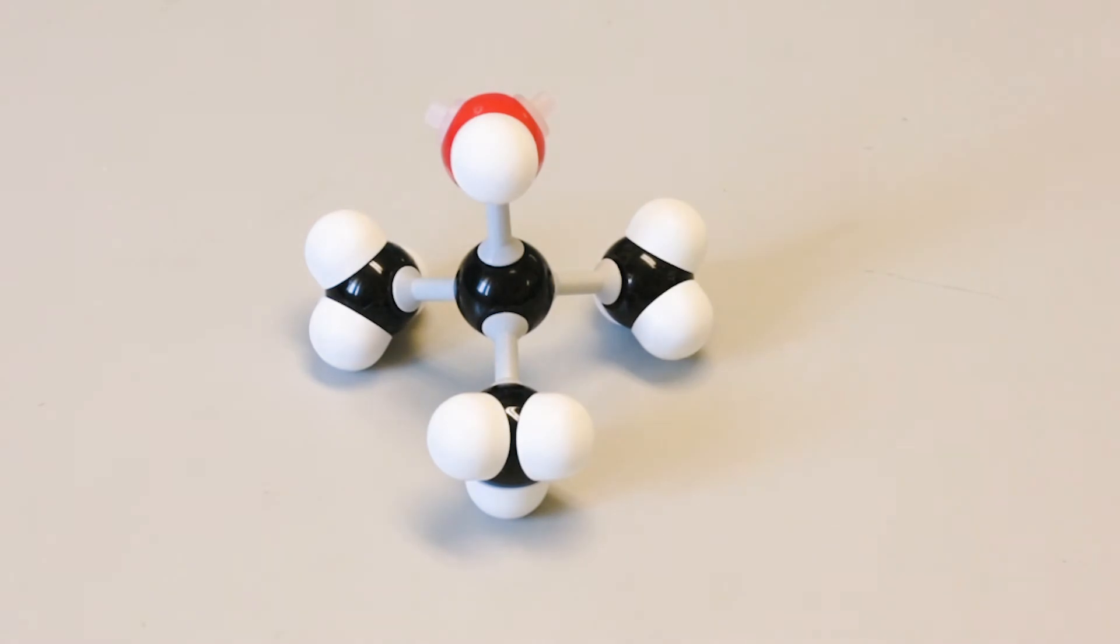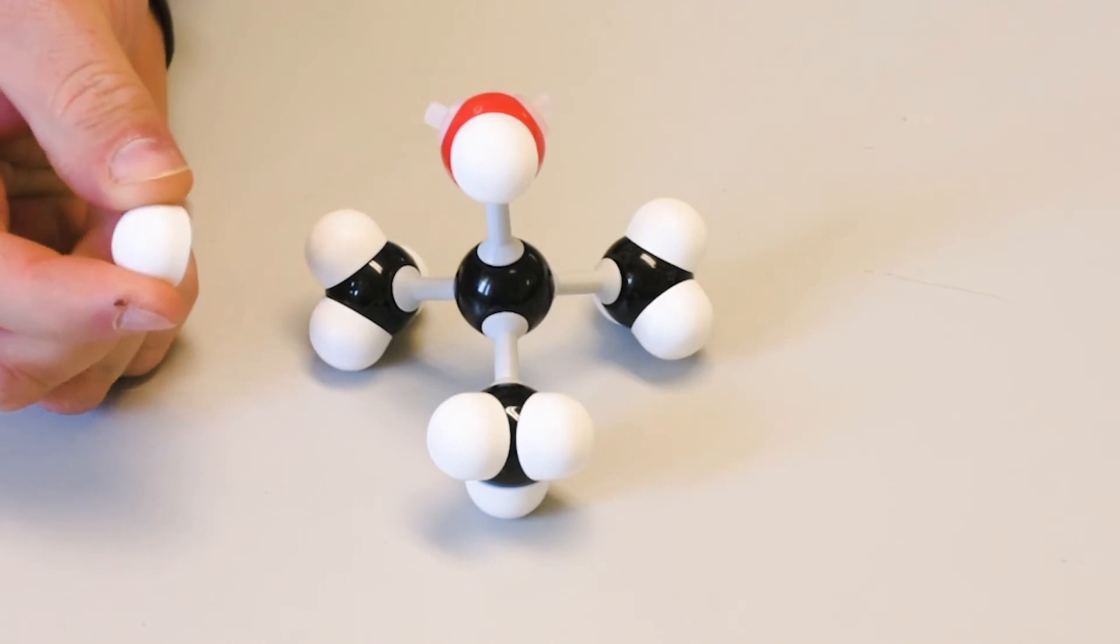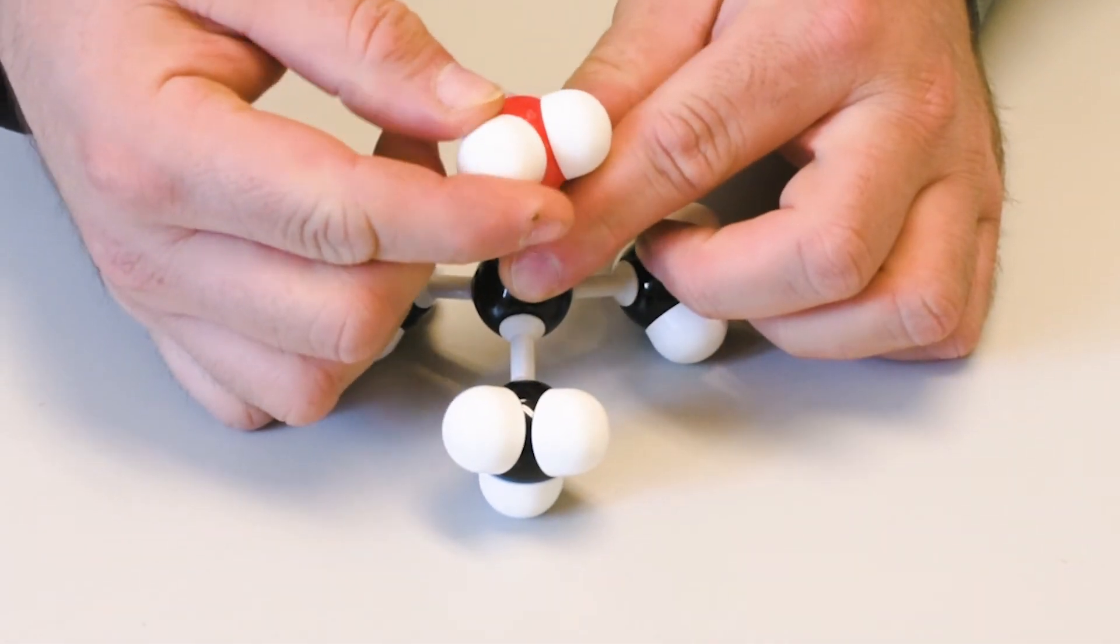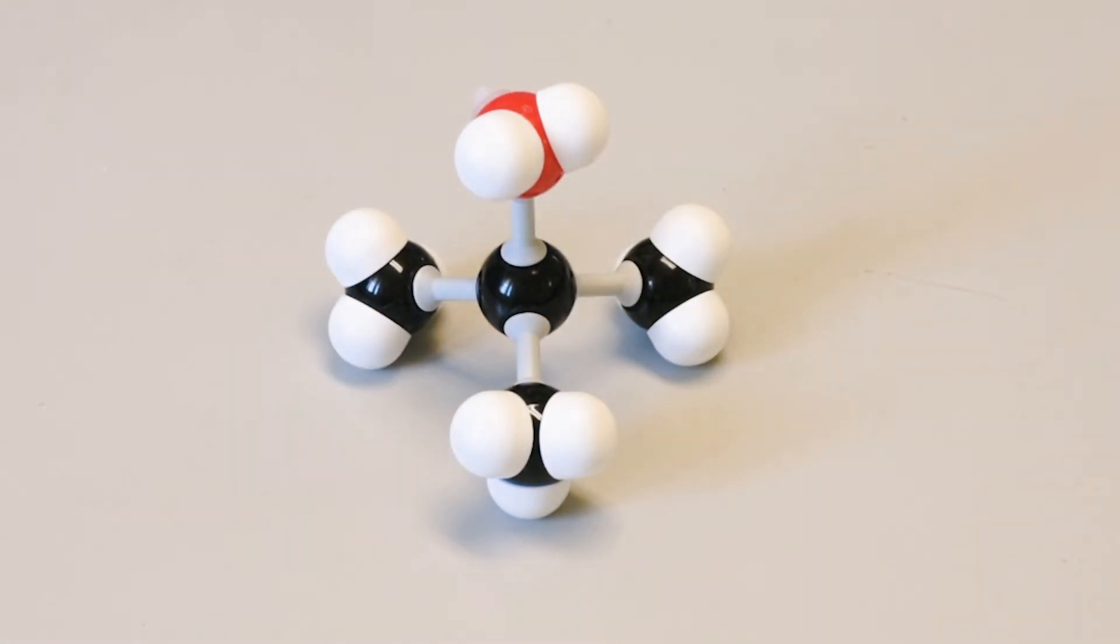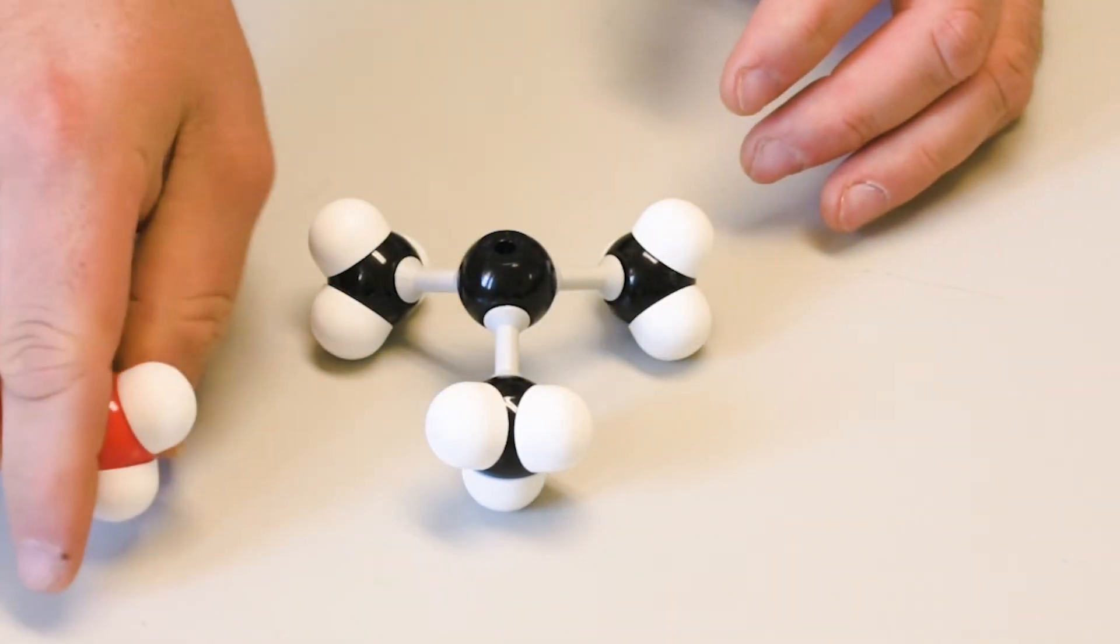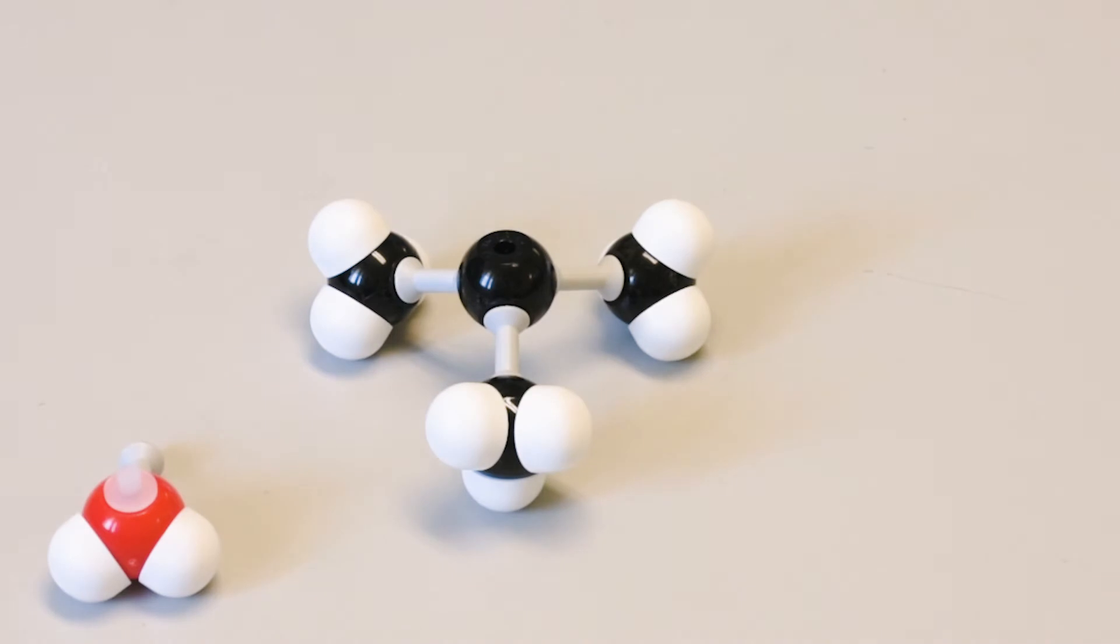Under acidic conditions, the hydroxyl group adds a proton from solution that is attracted to a lone pair on the oxygen. The cation undergoes an electron shift to make water a leaving group, leaving behind the carbocation with a tertiary carbon center.